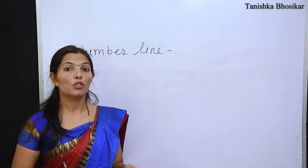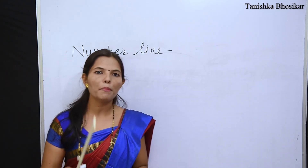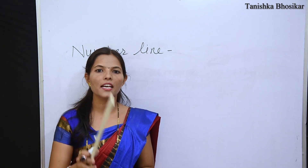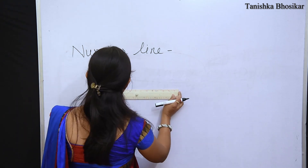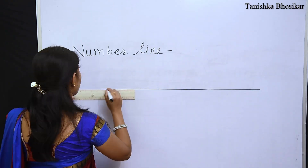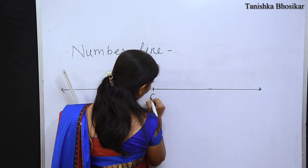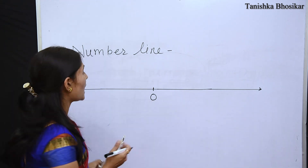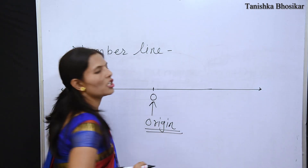Congratulations, Tanushka! So students, let's see how to show these integers on the number line. Let's see how to draw a number line. As you can see on the board, there is a line with an arrow. The central point of that line is 0. The 0 is very important — the 0 means the origin.